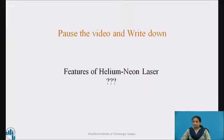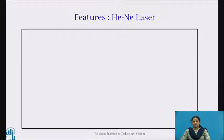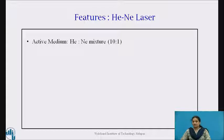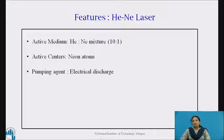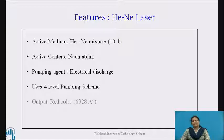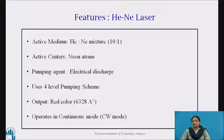Students, please pause the video and try to write down the features of helium-neon laser. In summary, the features of helium-neon laser are: the active medium used is a mixture of helium and neon in the proportion 10 to 1; neon atoms are the active centers; the carriers are pumped by electrical discharge; a four-level pumping scheme is used; we obtain a red color laser beam of wavelength 6,328 angstrom units; and helium-neon laser operates in continuous wave mode.